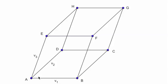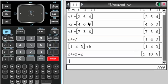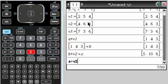D, I need to go from A to D using V2. So I'll take A plus V2 and I will store that as D.